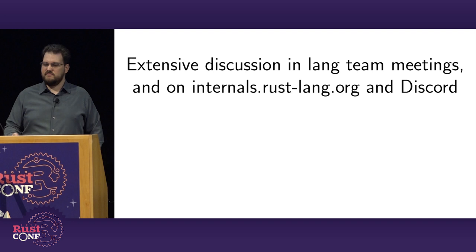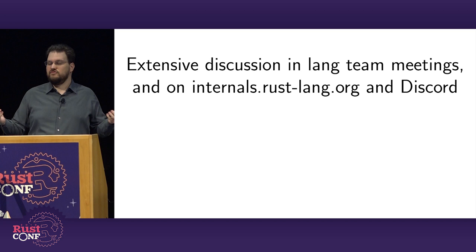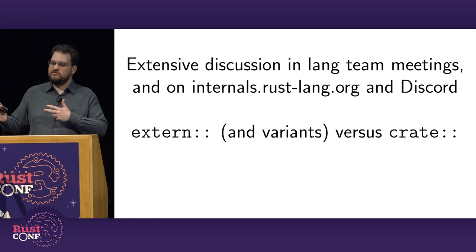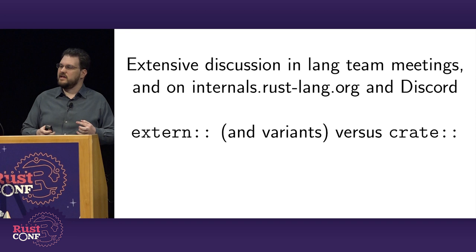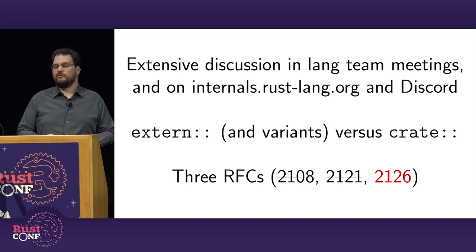We have regular weekly video calls with all members of the language team. We had discussions on the Rust internals forum, on Discord, and in-person conversations — this was one of our top topics. We debated whether you should reference external crates specially with '::' or reference your own crate specially, trying to figure out what is the unusual case versus the common case. We kept going back and forth. This resulted in not one, not two, but three separate RFCs trying to get this right. The first two were closed; the third eventually reached an approach we all had rough consensus on.